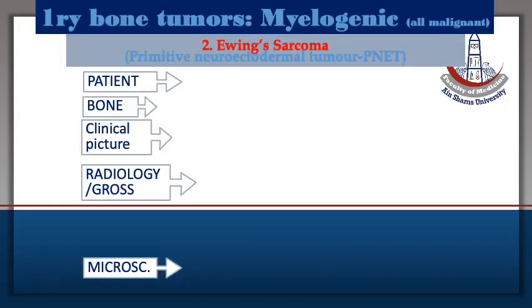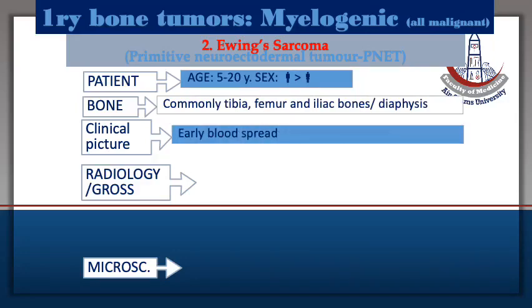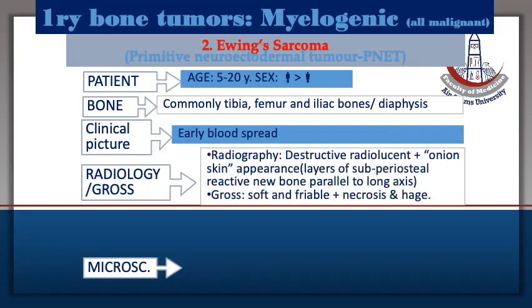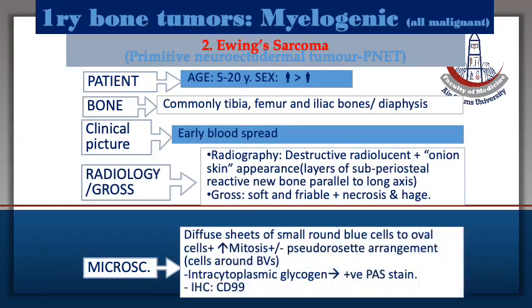Ewing sarcoma is the second myelogenic malignant tumor. It occurs in children in the diaphysis of the long bones with unfortunately early blood spread. It produces an osteolytic lesion with new bone formation forming onion skinning in the X-ray. Under the microscope it forms a round blue cell tumor in the form of sheets with rosetting and rich cytoplasmic glycogen.